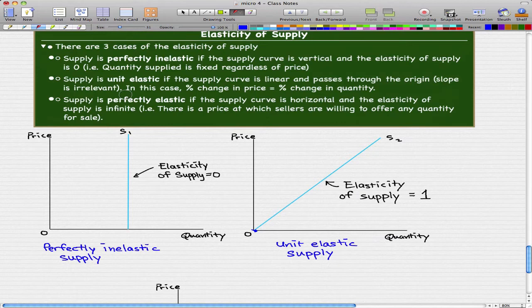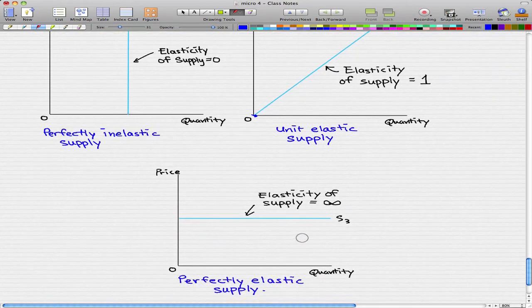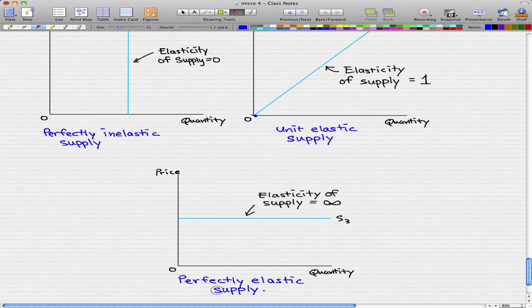The third part is where supply is perfectly elastic. And that happens when the supply curve is horizontal and the elasticity of supply, in this case, is infinite. So this would be an example of that. You can see that it's a horizontal curve. The elasticity of supply is infinite. And that's just a model illustrating our perfectly elastic supply.